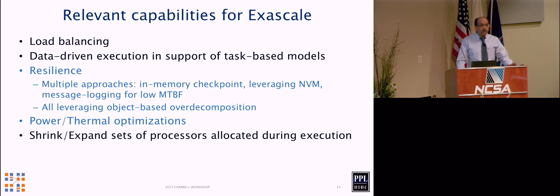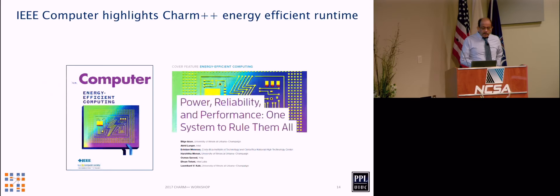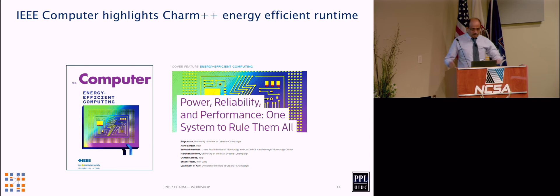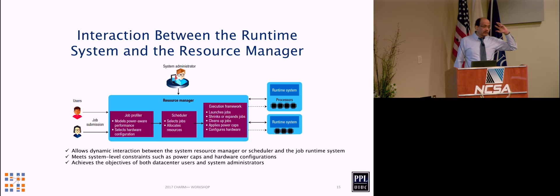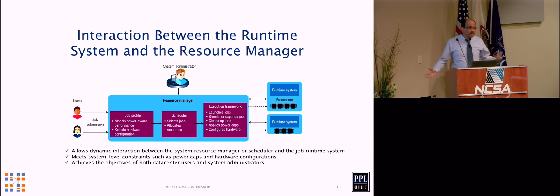Right now it's mainly nodes, and we're working on other ways of switching cores on and off for a job. This is useful in the cloud but also in flexible resource management of large-scale machines. We had an IEEE Computer article: 'Power, Reliability, and Performance: One System to Rule Them All' — the ruling system being CHARM++. The sketch shows a resource manager at the machine level and a runtime system at the job level, communicating through shrink, expand, and other interfaces. That communication between job and machine resource managers is key, and the job manager has to be able to act adaptively.